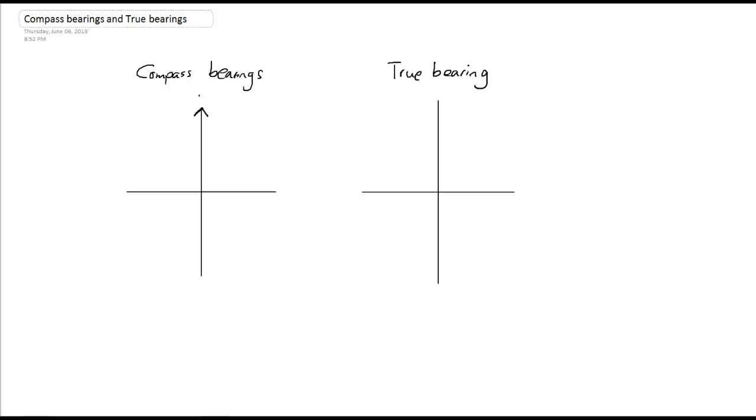Compass bearings is based on the concept that we have north, east, south, and west. Every direction from the origin can be defined using one of these, using either the north or the south first. For example,